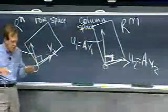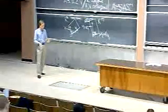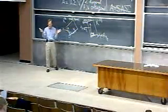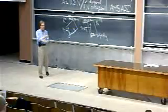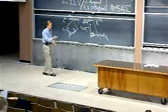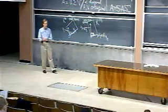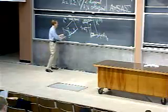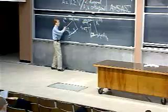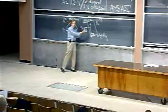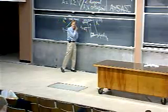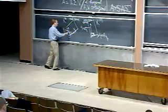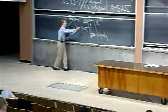Can I find an orthogonal basis for the row space? Of course — Gram-Schmidt tells me how. Start with any old basis and grind through Gram-Schmidt; out comes an orthogonal basis. But if I just take any old orthogonal basis, when I multiply by A, there's no reason why it should be orthogonal over here. So I'm looking for this special setup where A takes these basis vectors into orthogonal vectors over there.